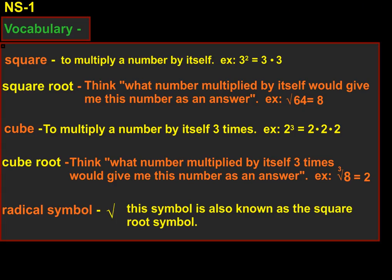We'll start by going over some vocabulary. Square: to multiply a number by itself. For example, 3 squared is equal to 3 times 3.